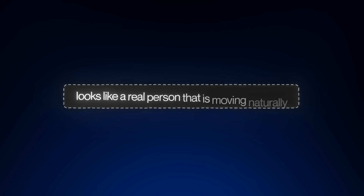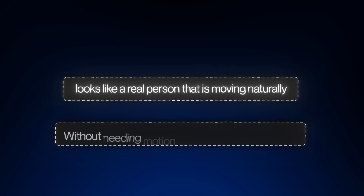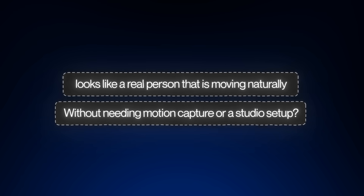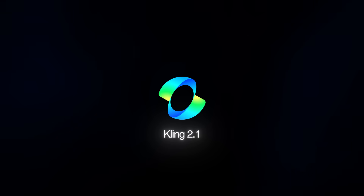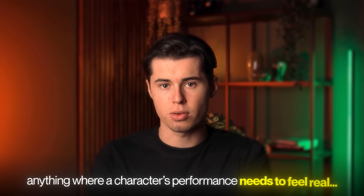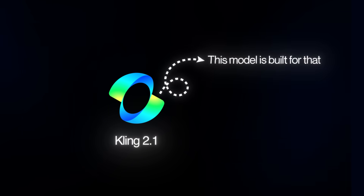While Pixverse gives you those visuals, what if you need something more grounded? Something that looks like a real person moving naturally without needing motion capture or a studio setup? That's where Kling comes in. If you're building talking head content, persona-led videos, or anything where a character's performance needs to feel real, this model is built for that.